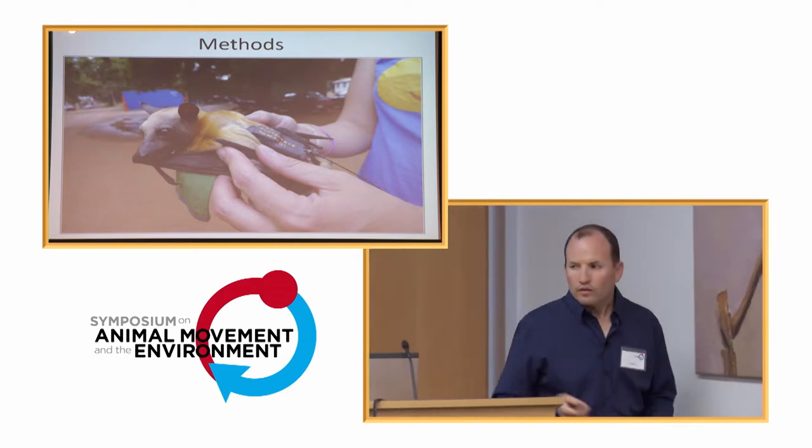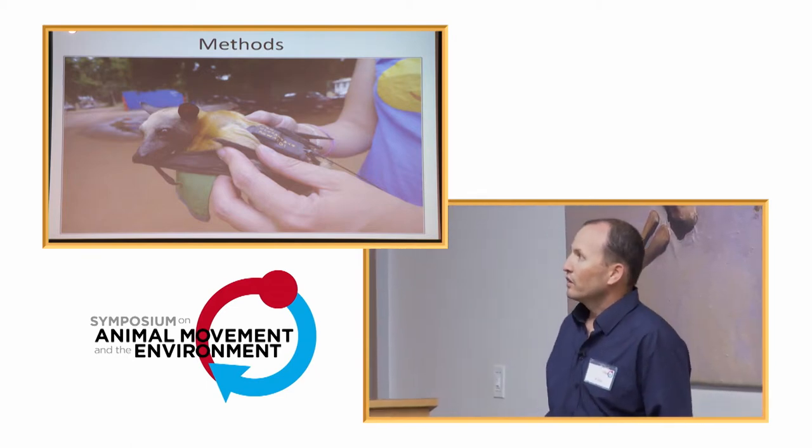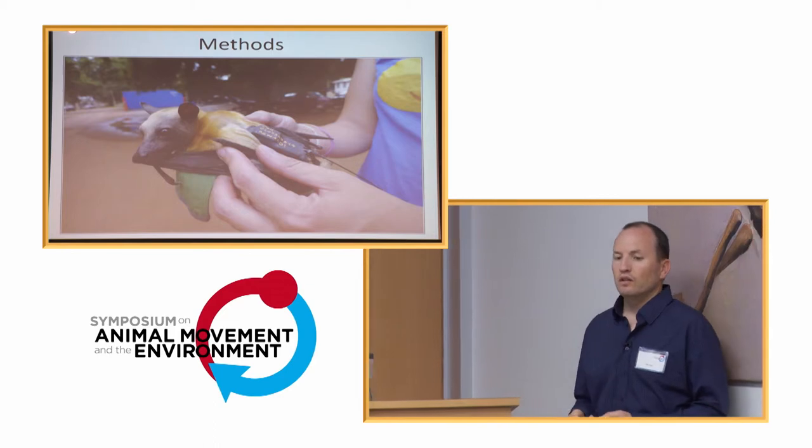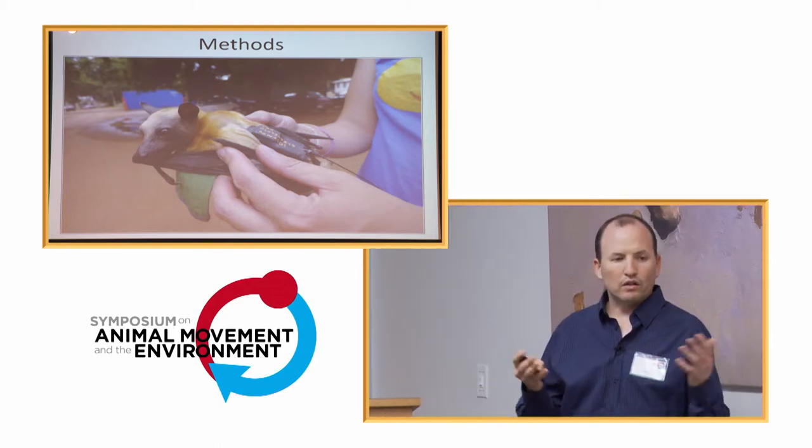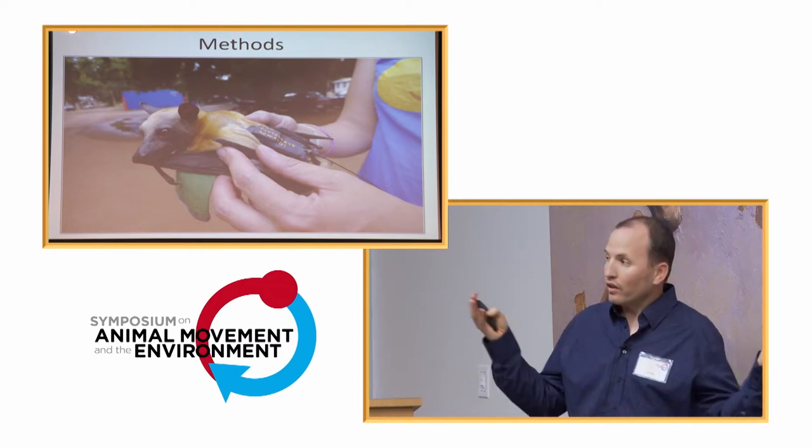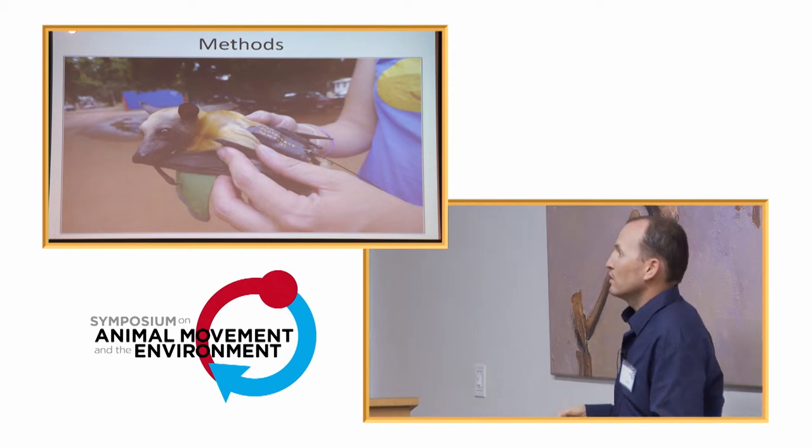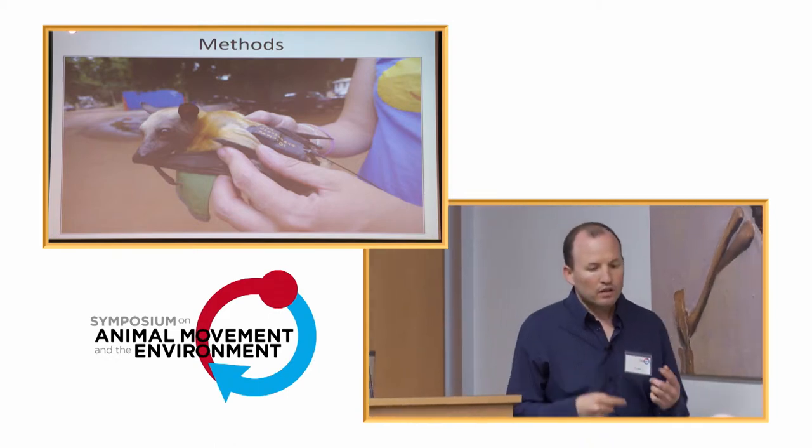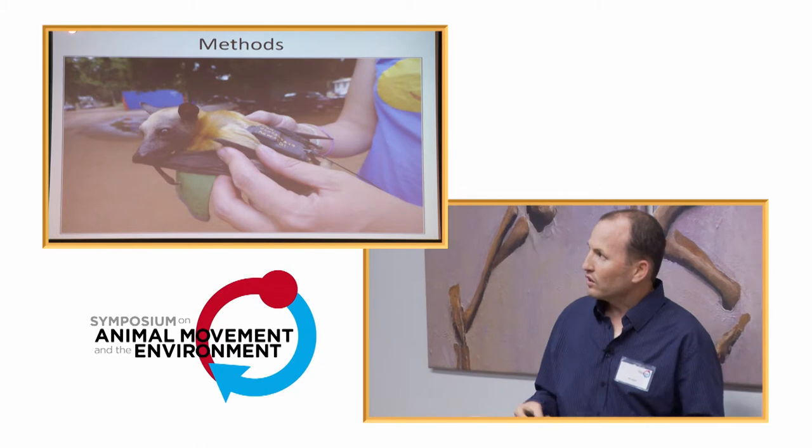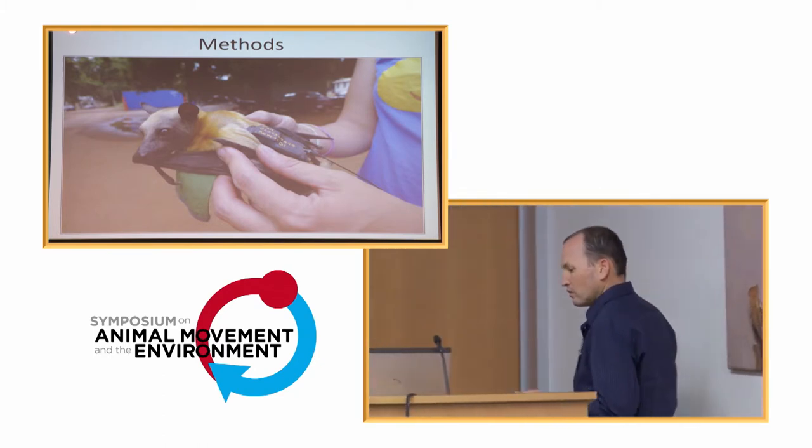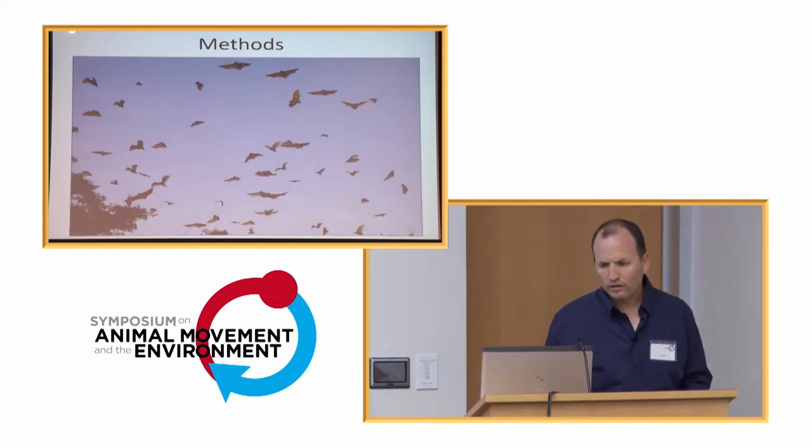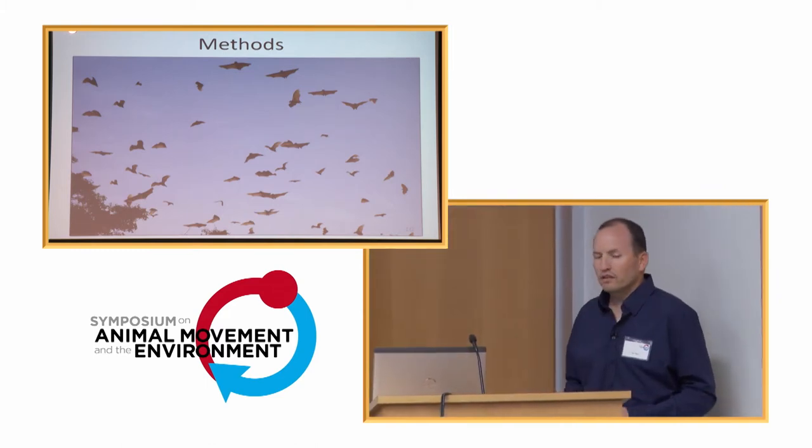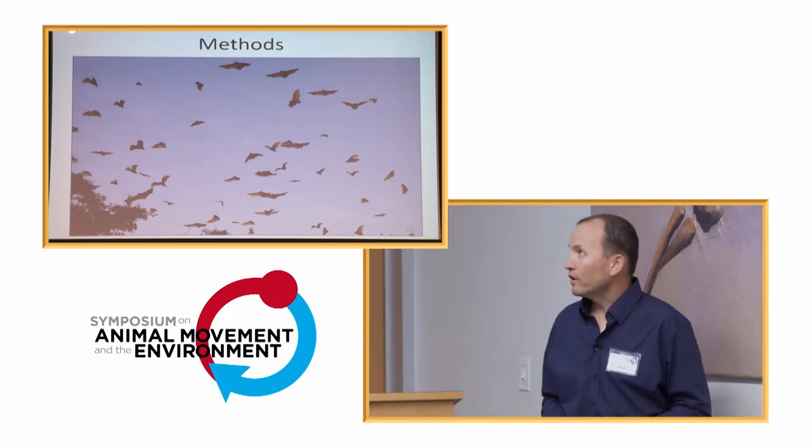So, straw-colored fruit bats were tagged in the field using GPS loggers. So, they were released near the colony and were just flying around with their mates and all other bats that were at this time in the colony. And the data from the tags was downloaded a day or several days later within the colony using radio transmission. And the bats were just freely roaming, going away, and the tag didn't seem to have any discernible effect on their behavior, as far as we could tell.